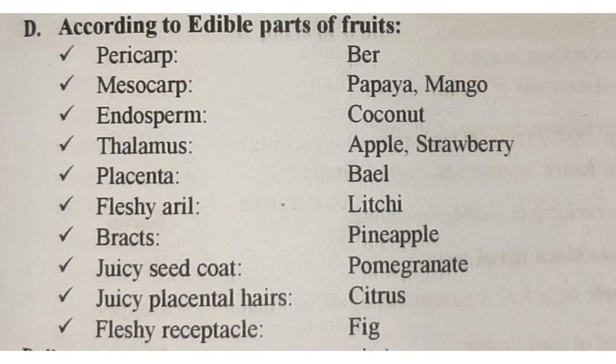Now, according to edible parts: ber — we eat the pericarp. For papaya and mango, we eat the mesocarp, because we remove the outer skin and we don't eat the inner seed — so mesocarp. Coconut — endosperm. Thalamus for apple and strawberry.